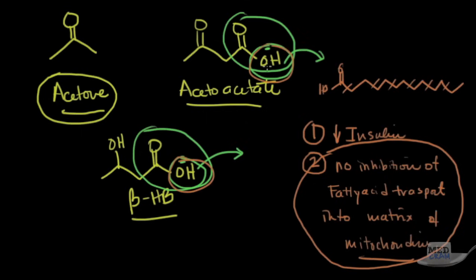So where's the acid coming from? The acid is coming from the ketone bodies, which are coming from the acetyl-CoA, which are coming from the fatty acids, which are coming from the outside, which are being transported because there is no insulin. That's very important.